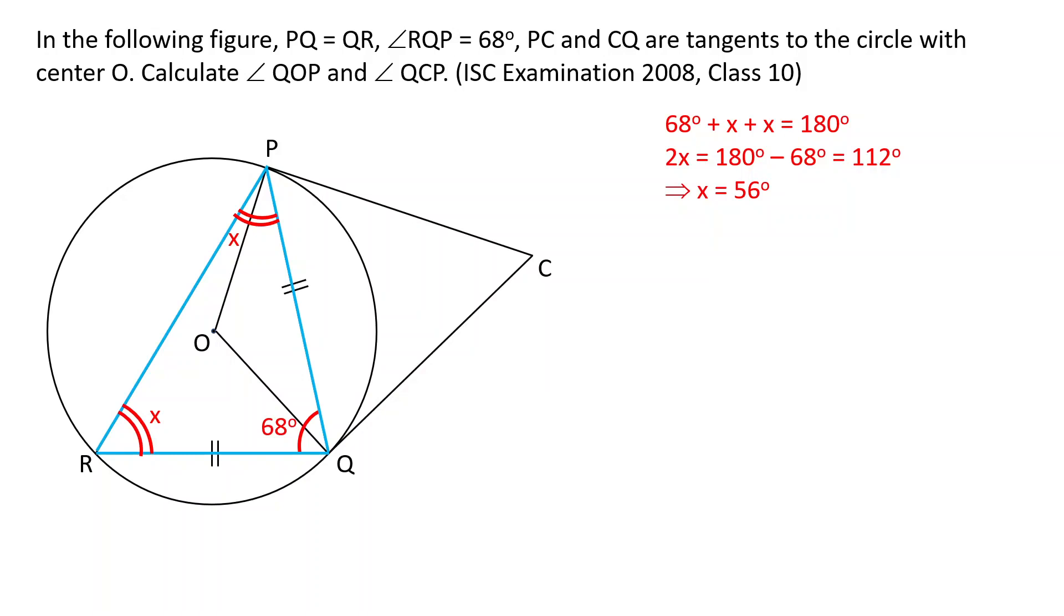Now the angle subtended by an arc PQ at the center is twice the angle subtended by same arc at the circumference of circle. So the angle QOP is 2x, and 2x is 112 degrees.